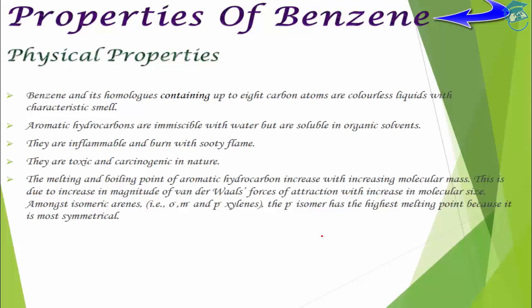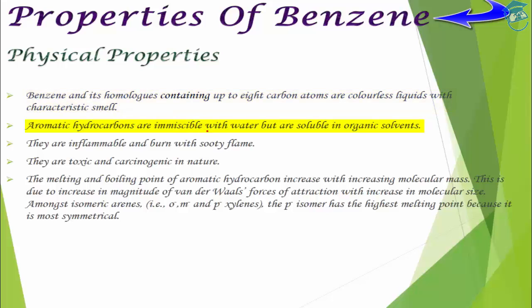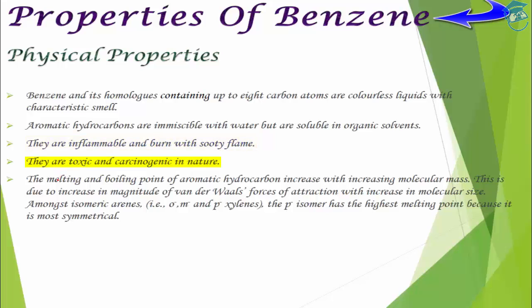Now let's look at the physical properties of benzene. Benzene and its homologs up to the eight-carbon atom are colorless liquids with a characteristic smell — that is why they are known as aromatic compounds. They are immiscible in water but soluble in other organic solvents, and they also have good solvent properties, so benzene is used as a solvent in various organic chemical reactions.